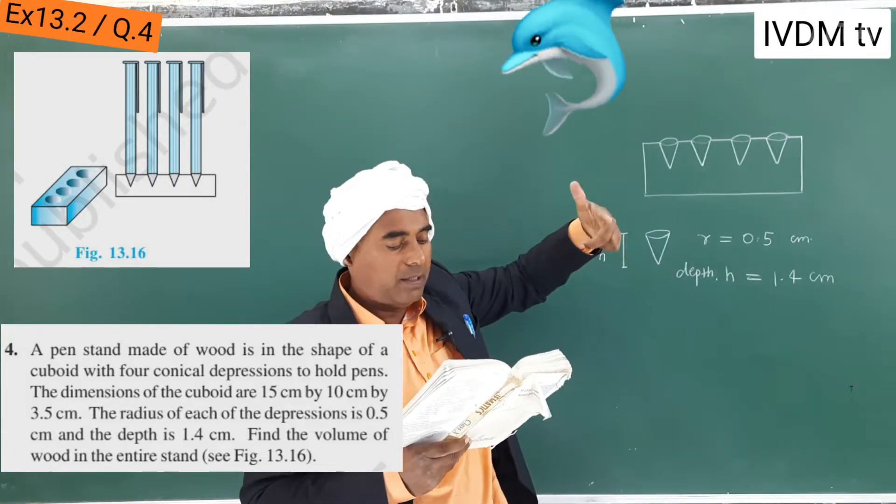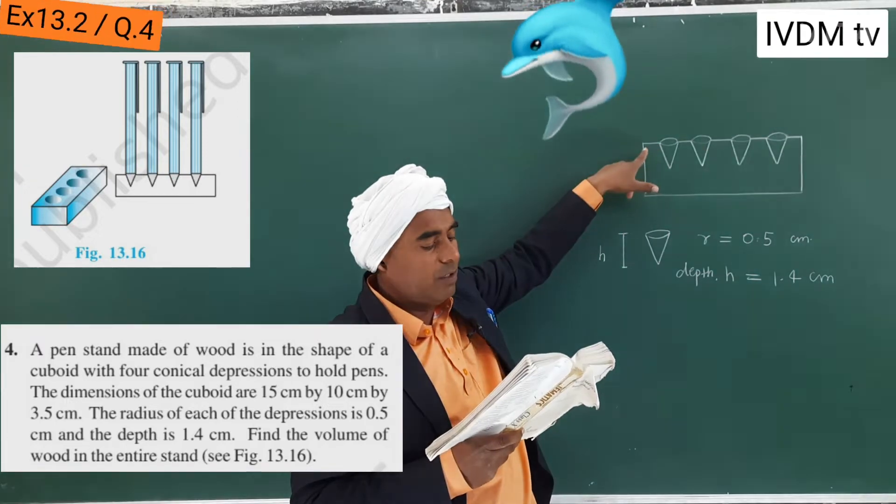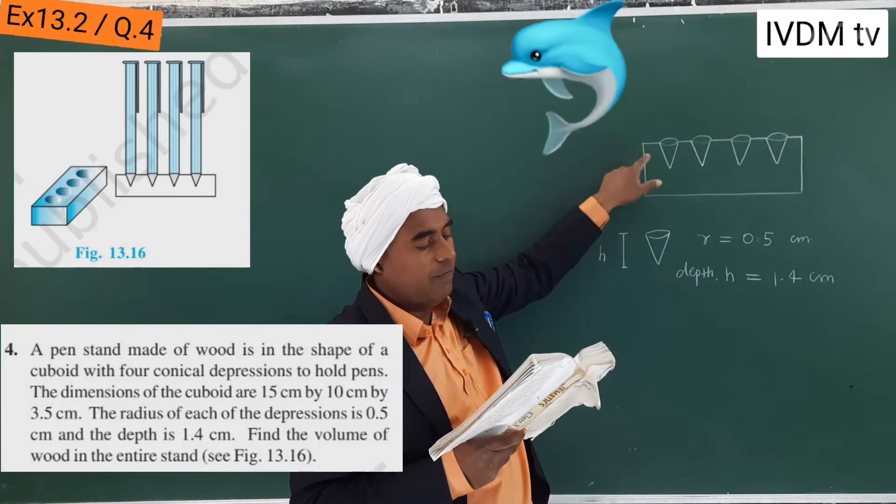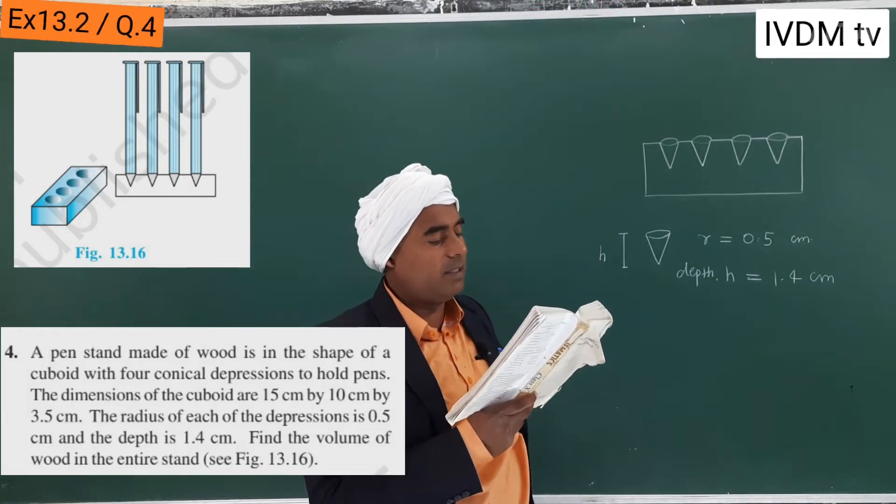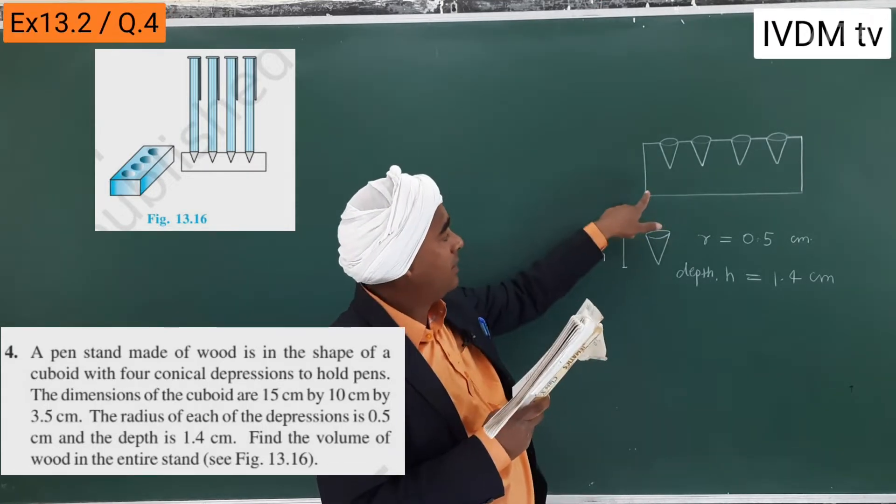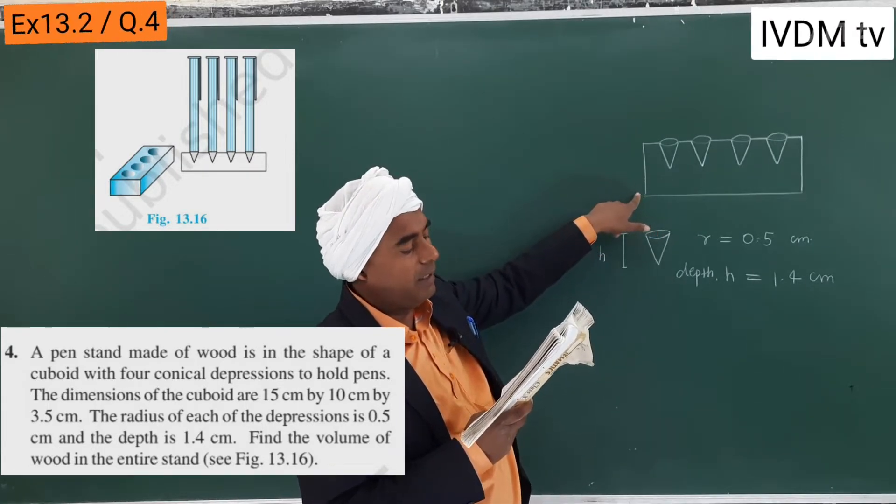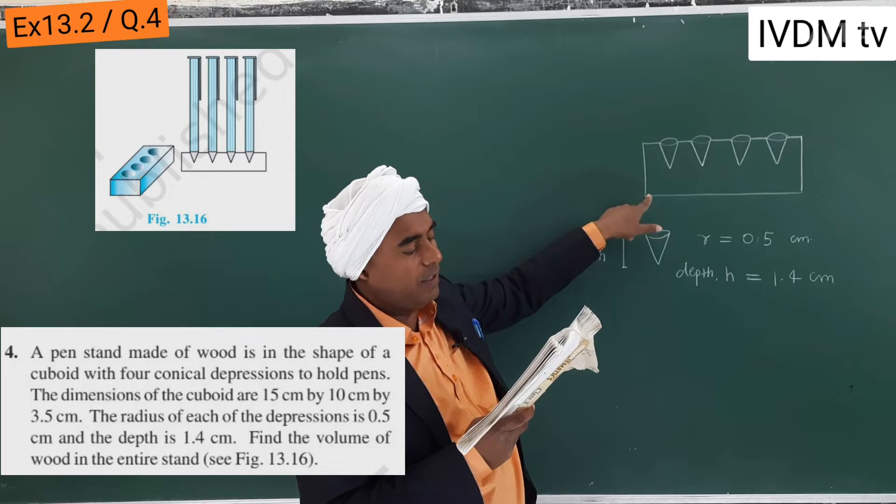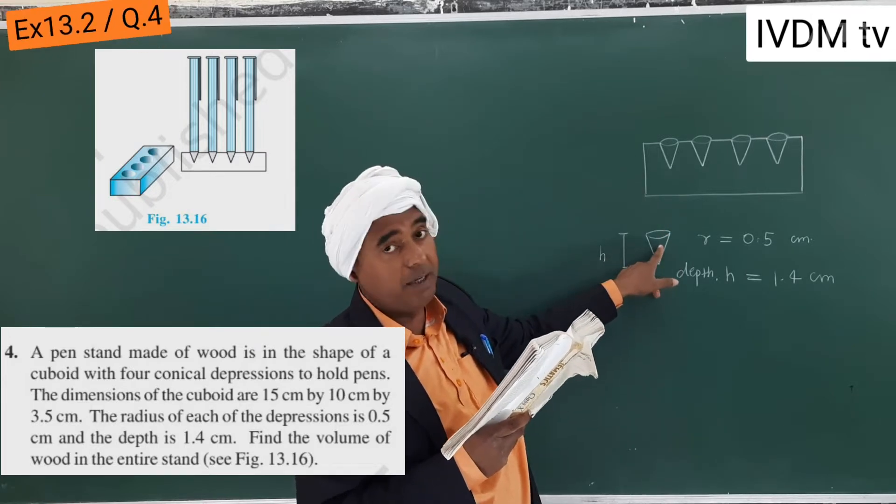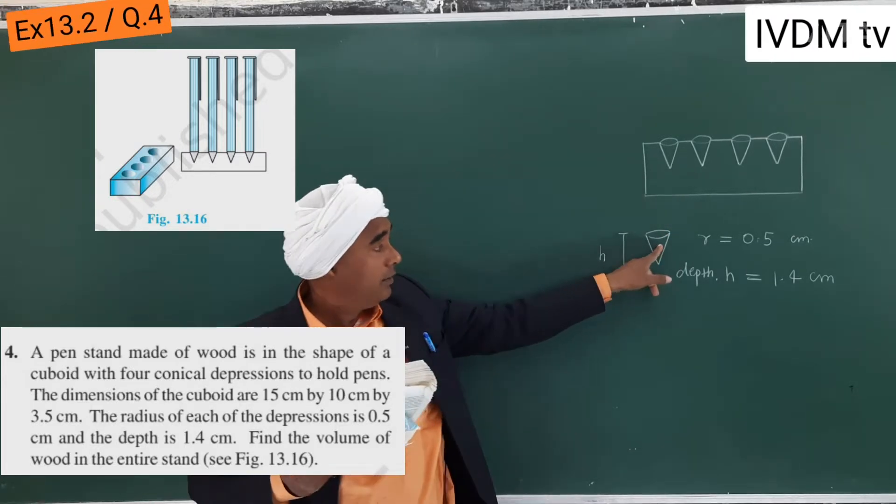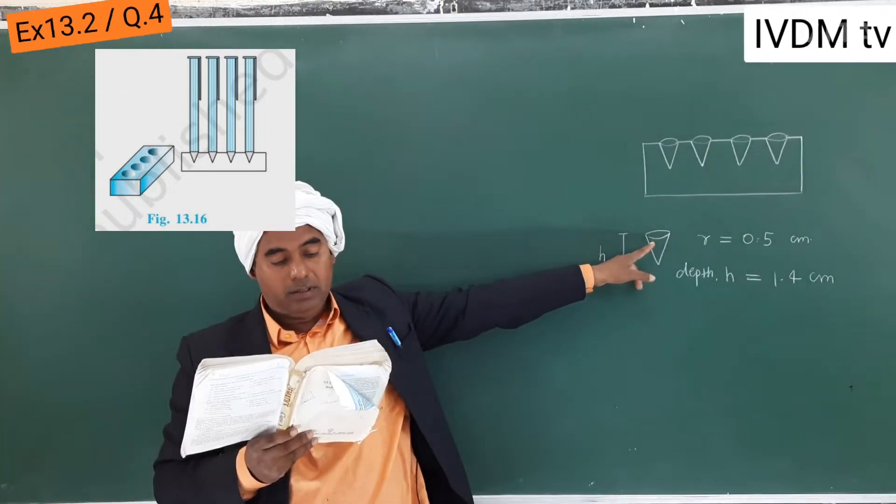The dimensions of the cuboid are 15 centimeter by 10 centimeter by 3.5 centimeter - this means length, breadth and height. The radius of each of the depressions, I have made depression separately here, the radius of each depression is r equals 0.5 centimeter.